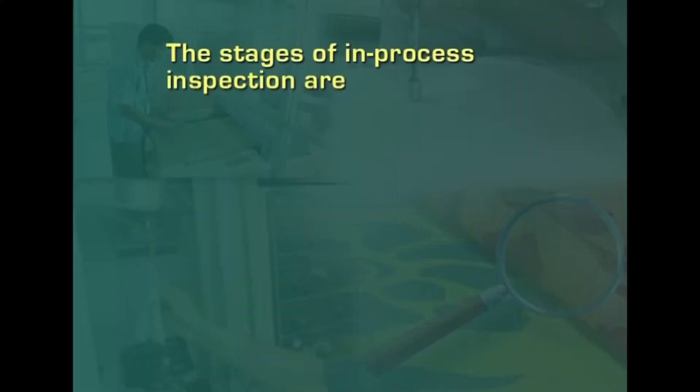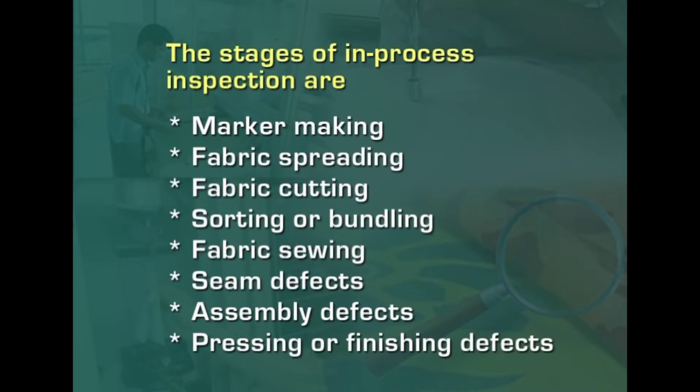In the garment industry, the process inspection starts from marker making and finishes with the making of the complete garment. The stages in in-process inspection are: marker making, fabric spreading, fabric cutting, sorting or bundling, fabric sewing, seam defects, assembly defects, and pressing or finishing defects.